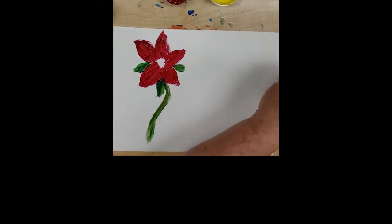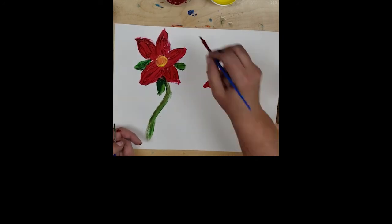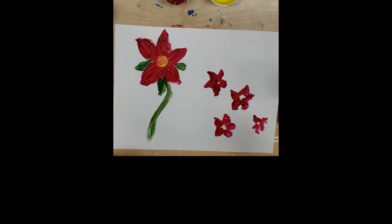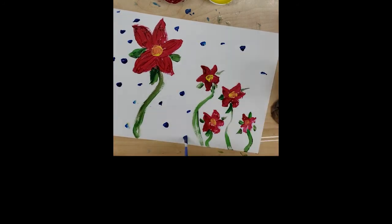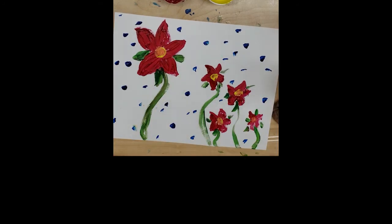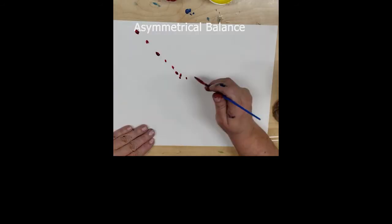Now I'm going to do a quick demonstration of asymmetrical balance. I'm going to paint a flower this time. I'm painting it large on the left hand side but close to the central point — close to that invisible line going down my paper. And then I'm putting a lot of smaller flowers on the right hand side to balance with it. So it's not symmetrical, but it's still balanced visually. That's asymmetrical.